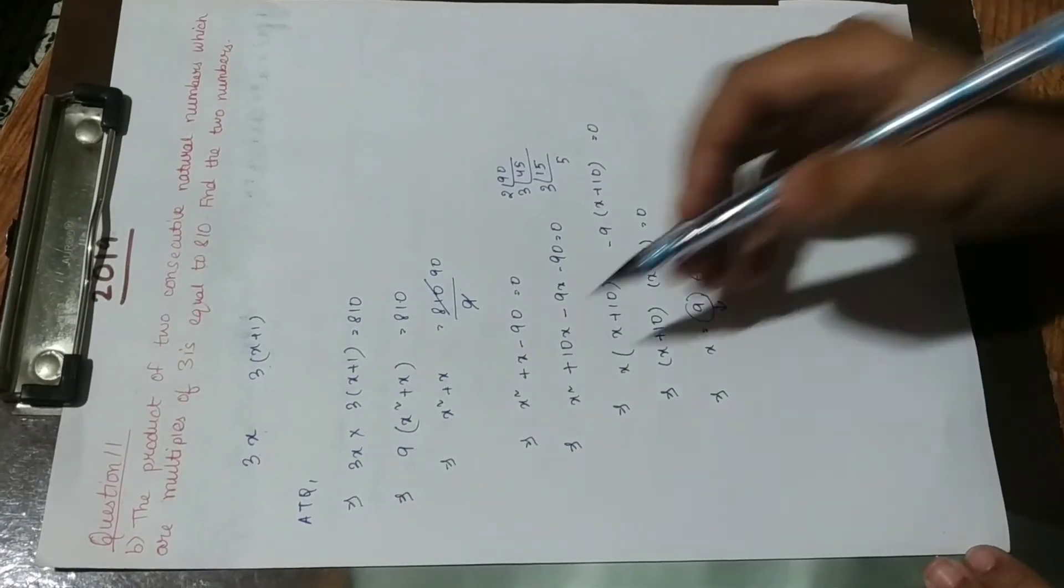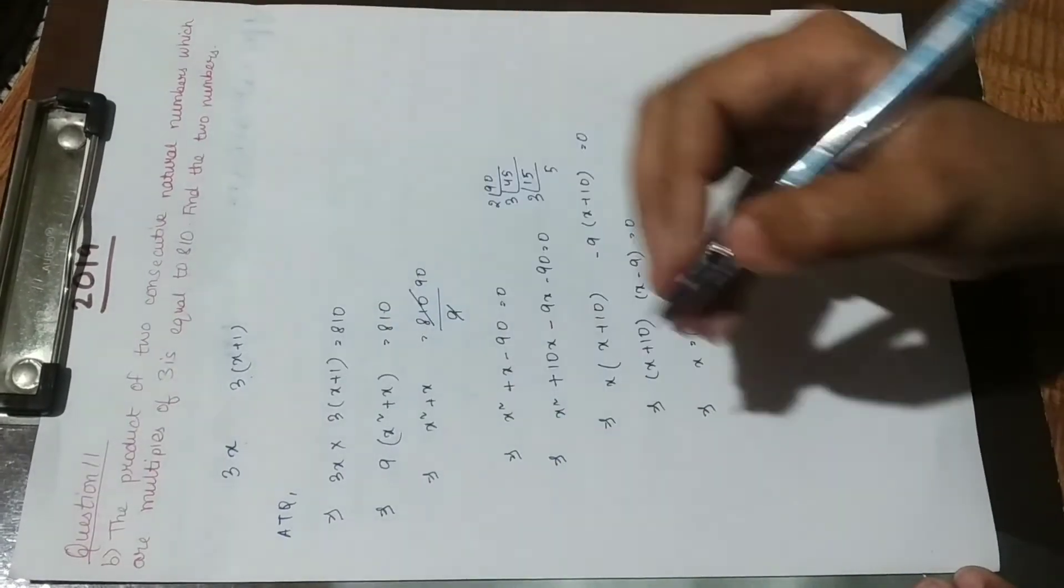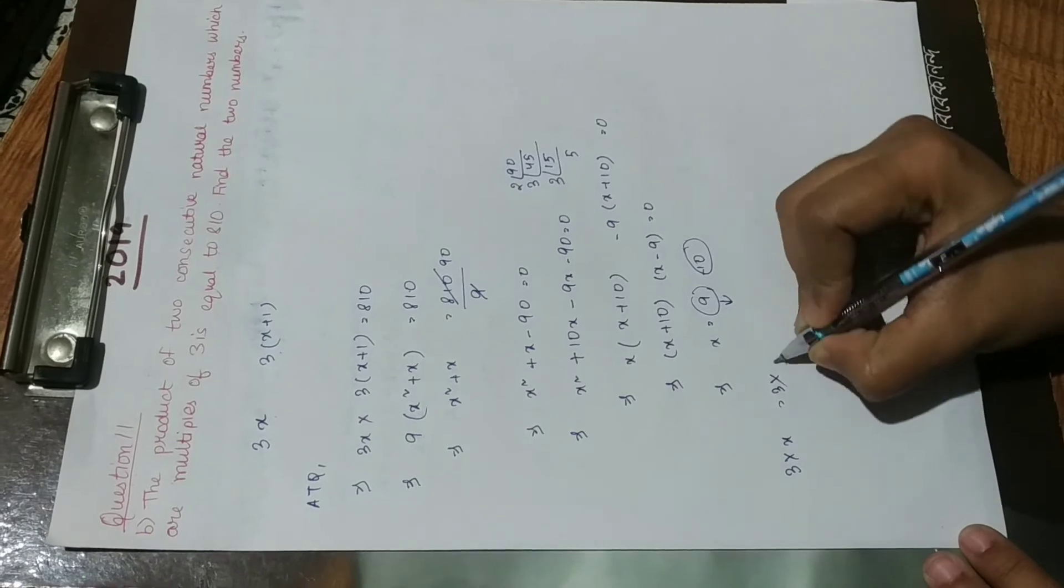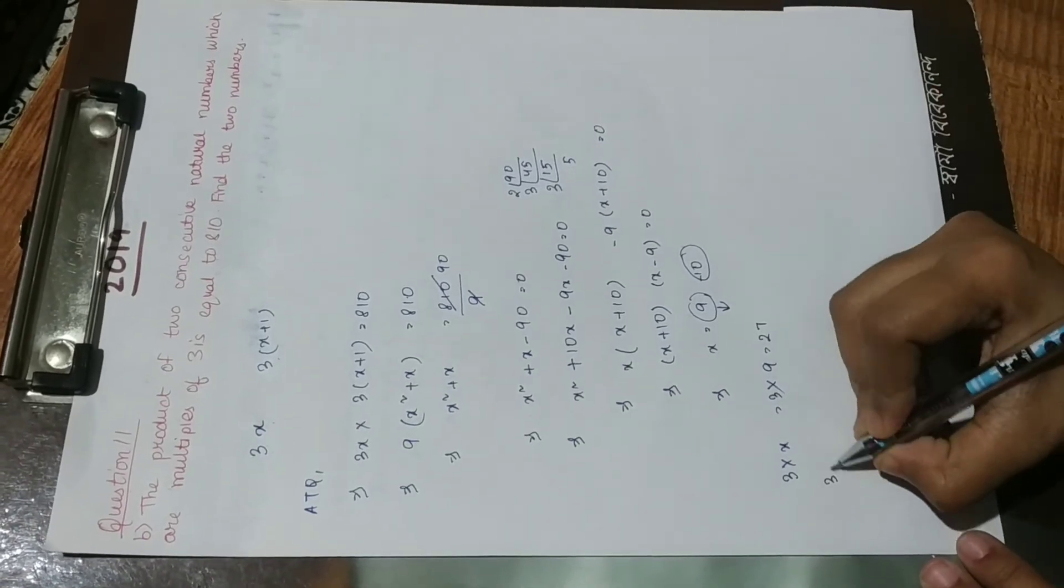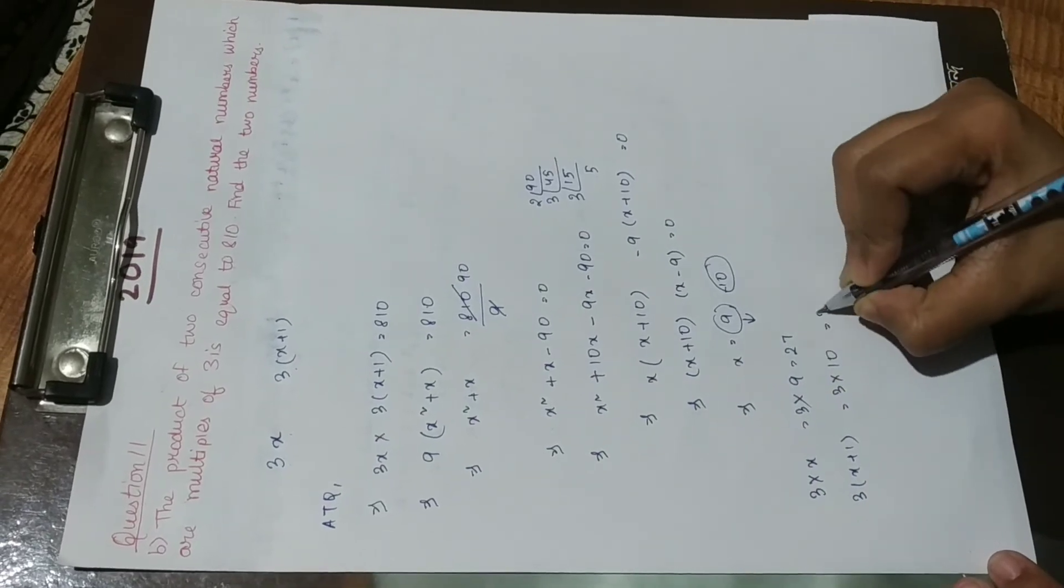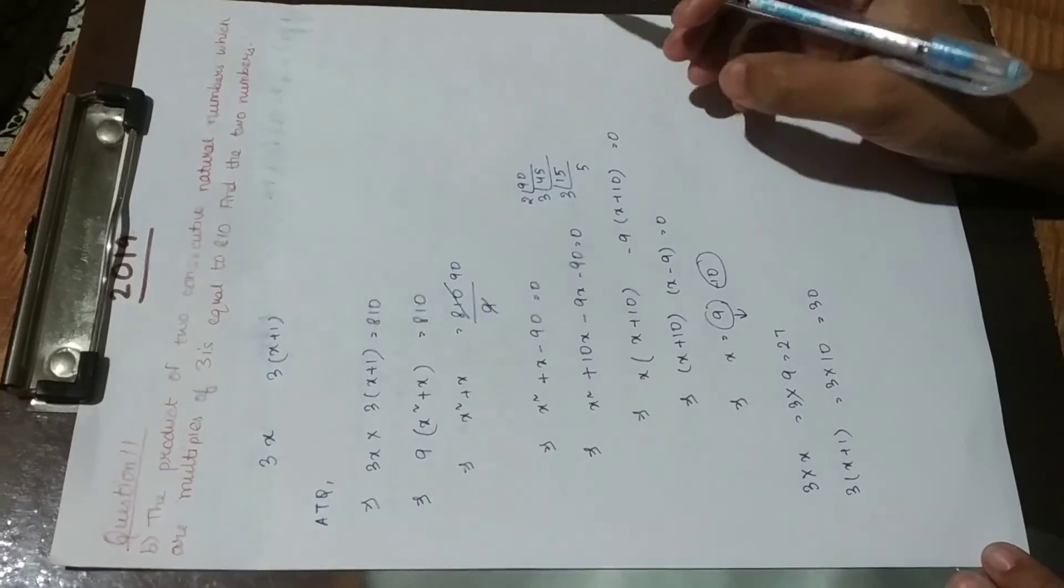So according to our question, we have to find 3x and 3x plus 1. So let's put the value of x in these two terms. We are getting 3 into x which is 3 into 9 equals 27. And the next number is 3 into x plus 1, that means 3 into 10 which gives us 30. So these are the two numbers which will yield 810 on multiplication.